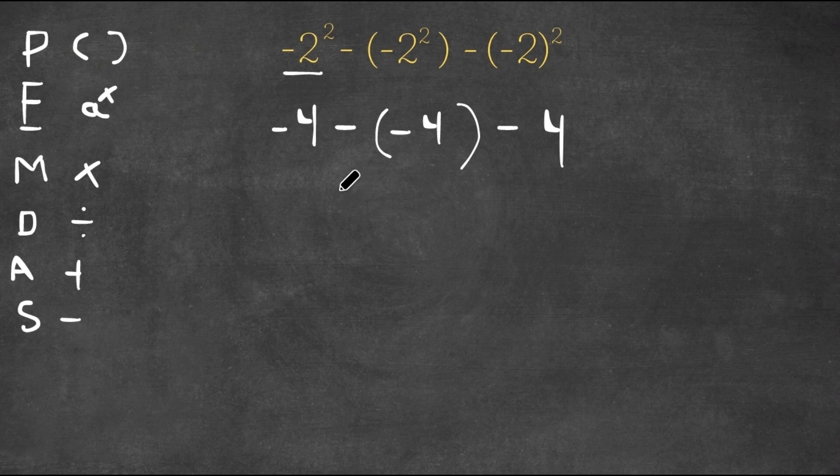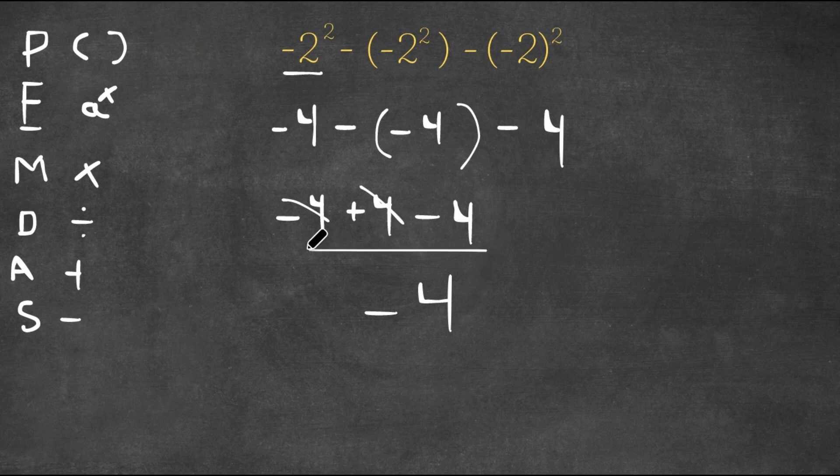So now we could simply just simplify this problem and solve. Now we have -4 - (-4) - 4. A negative of a negative is a positive, so plus 4, and we have minus 4. These two cancel out and we are simply just left with -4. And this is our answer.